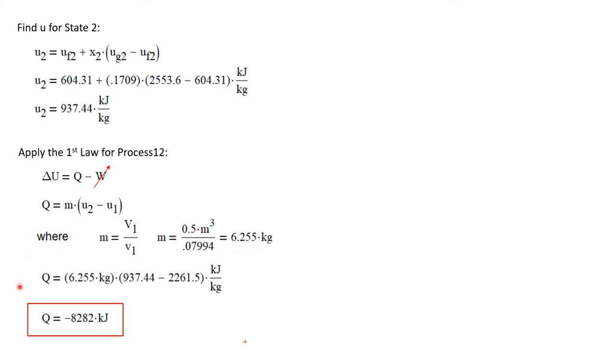Now I can solve for the heat transfer. Q equals mass 6.255 kilograms times u_2 minus u_1. Solving, I get a value of Q equals minus 8282 kilojoules. The negative, of course, indicating that energy was removed from the system via heat transfer during this process.